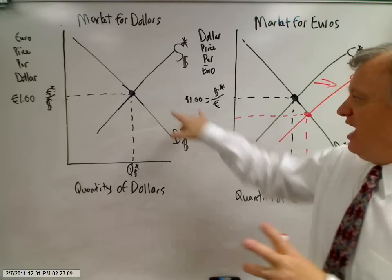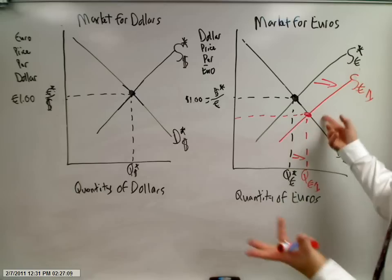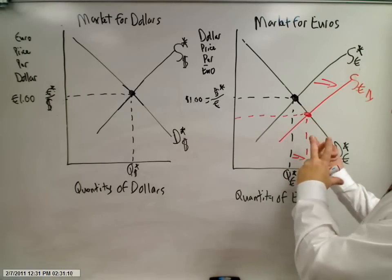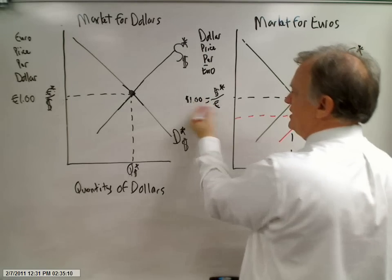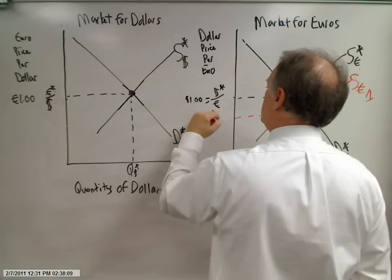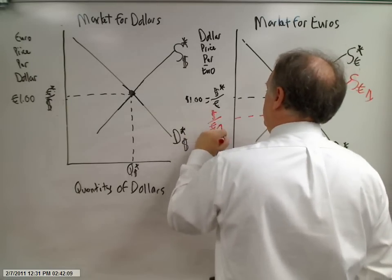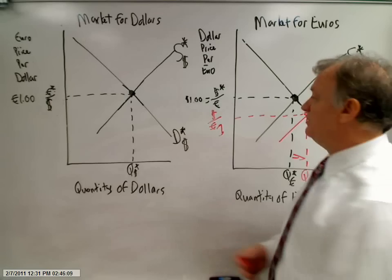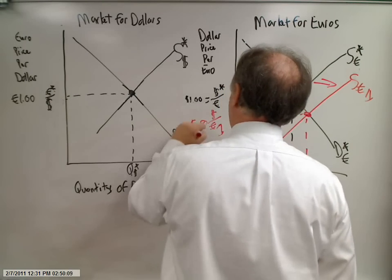So now we want to look at how that valuation is going to change. Just read the graph. We shifted the appropriate curve to the right. We know that the dollar price per euro is now something less than it was before. So our dollar price per euro sub 1 is now something less than a dollar.